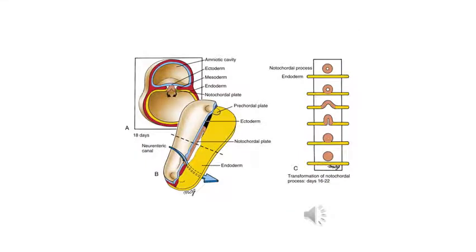The third important item in the third week of development is the development of the notochord. The hollow notochordal process grows cranially from the primitive node of the primitive streak, and eventually it turns into a solid kind of cartilaginous rod called the notochord, which eventually contributes to the development of the nucleus pulposus of the vertebral disc, at least for the fetus and children. The notochord has a mechanical and protein-secreting role in embryonic development.